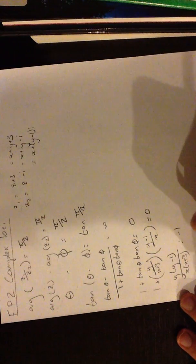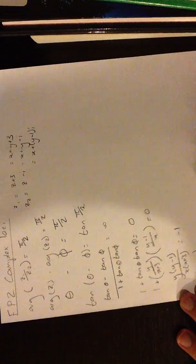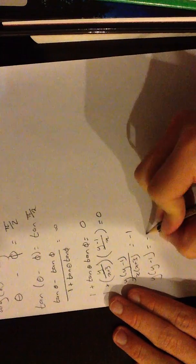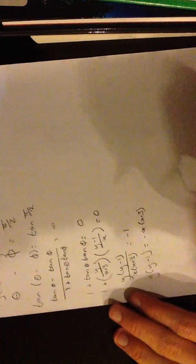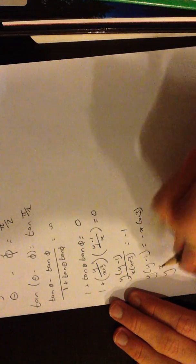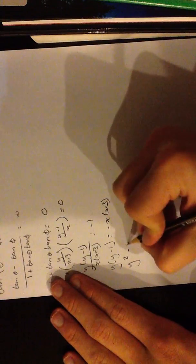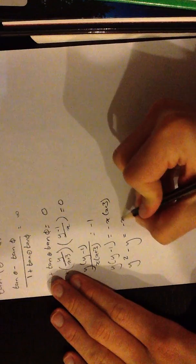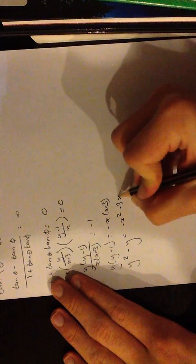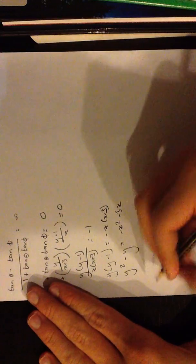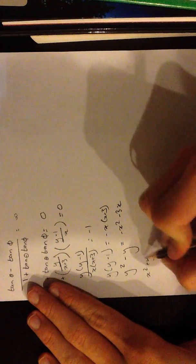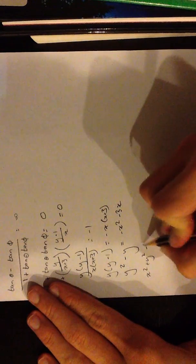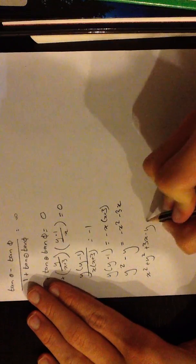Multiply both sides by x times (x plus 3), then open the brackets out: y squared minus y equals minus x squared minus 3x. Bring everything to one side: x squared plus y squared plus 3x minus y equals 0.